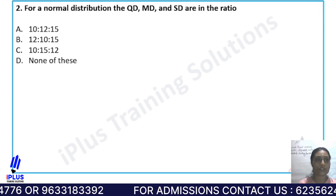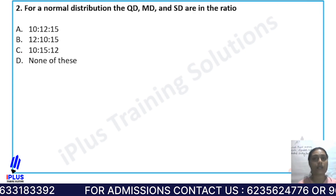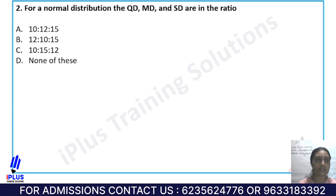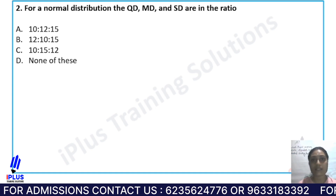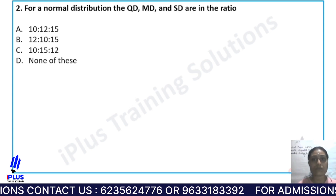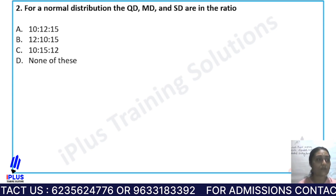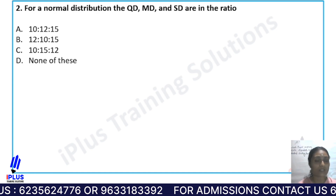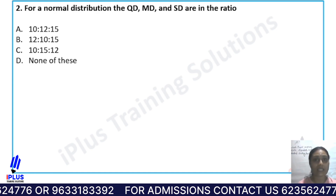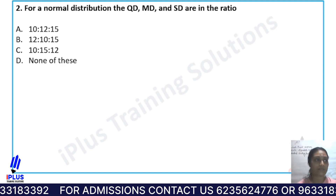Question 2: For a normal distribution, QD (quartile deviation), MD (mean deviation), and SD (standard deviation) are in the ratio — Option A: 10:12:15, Option B: 12:10:15, Option C: 10:15:12, and Option D: none of these.